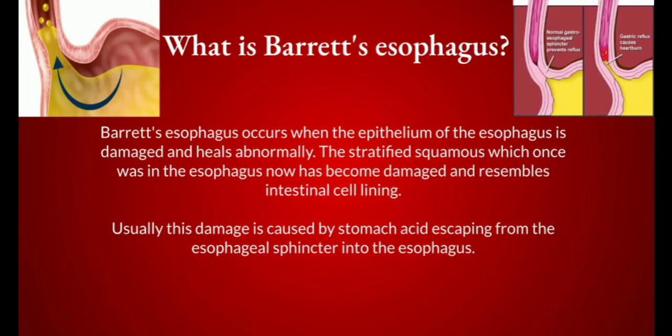What is Barrett's esophagus? Barrett's esophagus occurs when the epithelium of the esophagus is damaged and heals abnormally. The stratified squamous which once was in the esophagus has now become damaged and resembles intestinal cell lining. Usually this damage is caused by stomach acid escaping from the esophageal sphincter and into the esophagus.